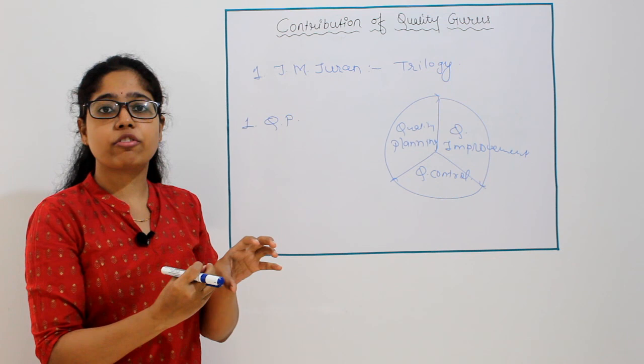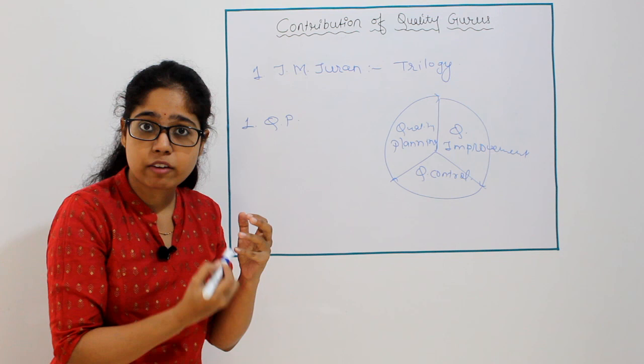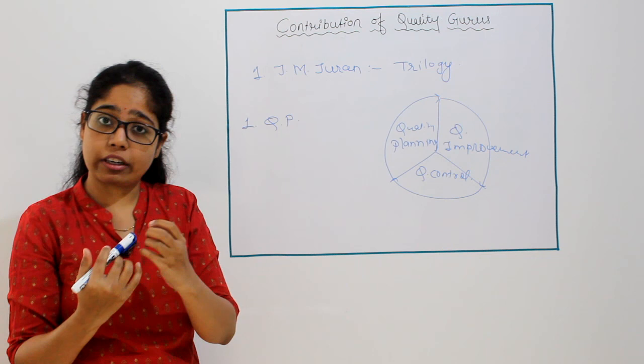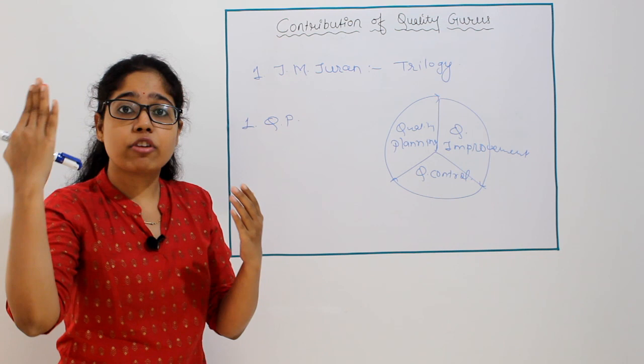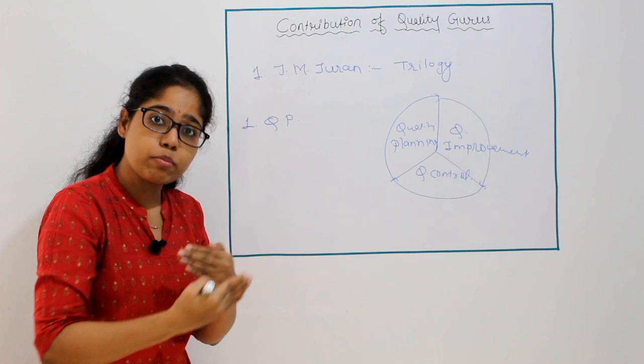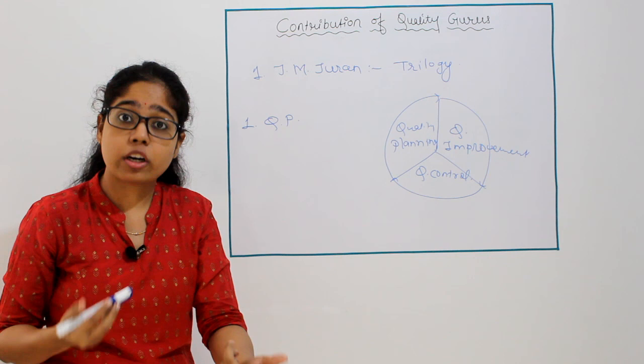Next is quality improvement. To improve the quality, you first receive the feedback of that product. Once you receive the feedback, you identify where the product is lagging behind and what the defects are. You then determine which defects can be most easily minimized and improve accordingly.